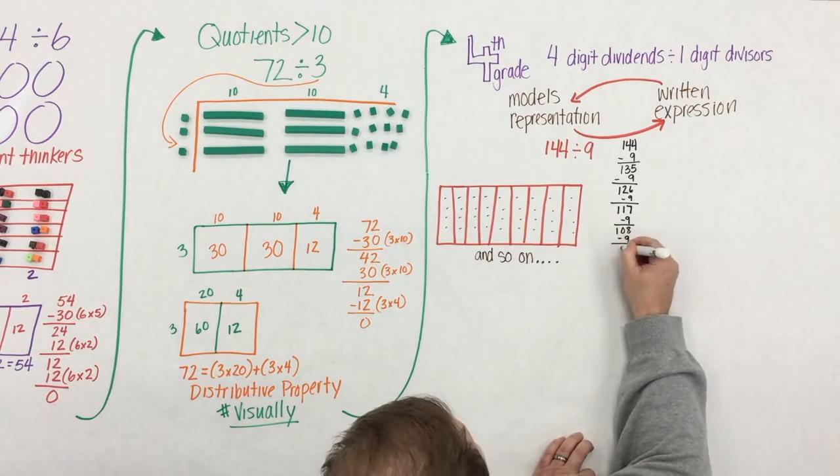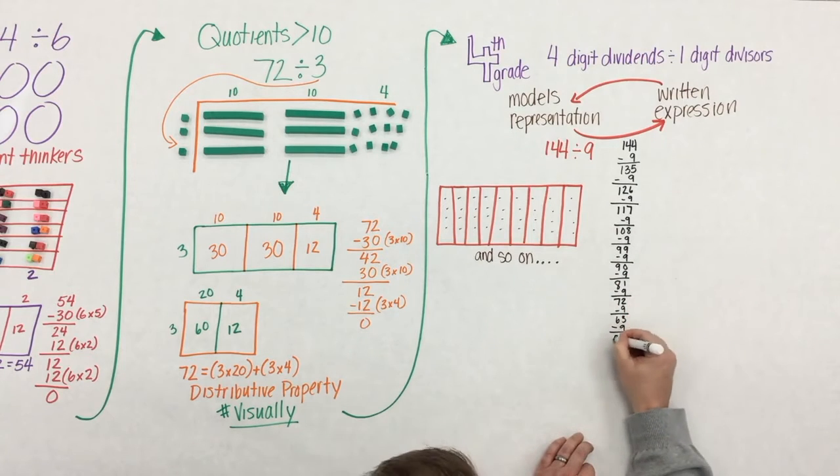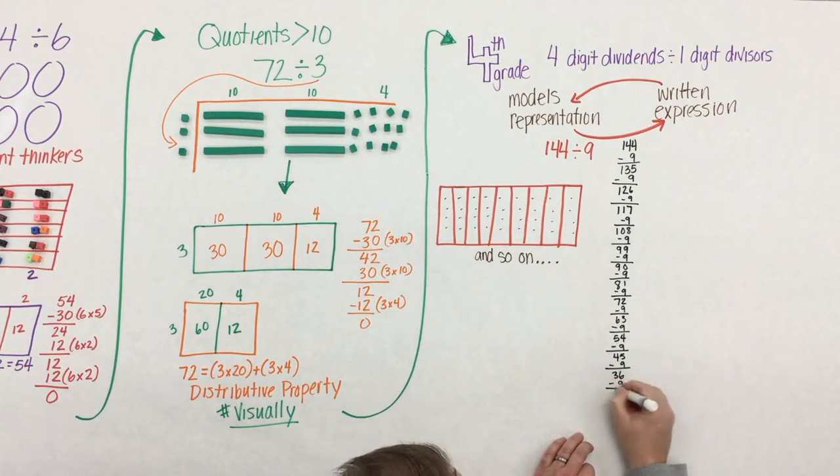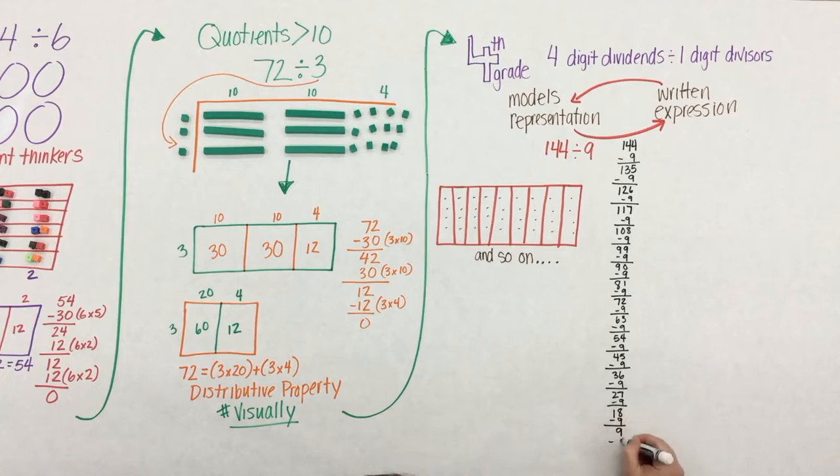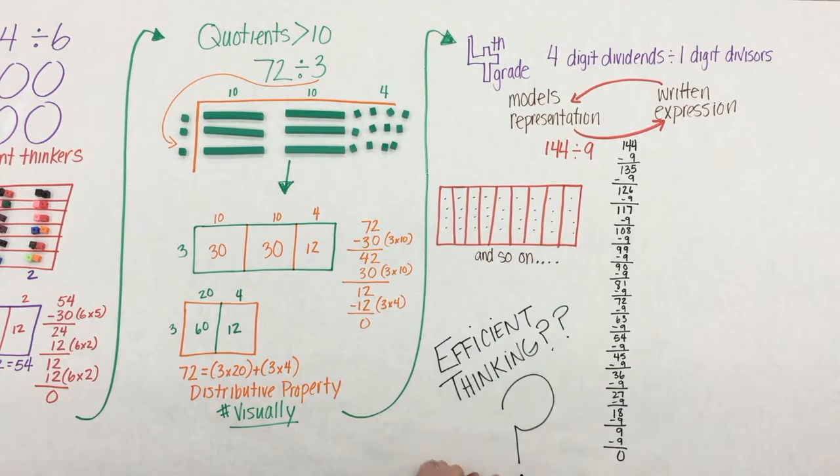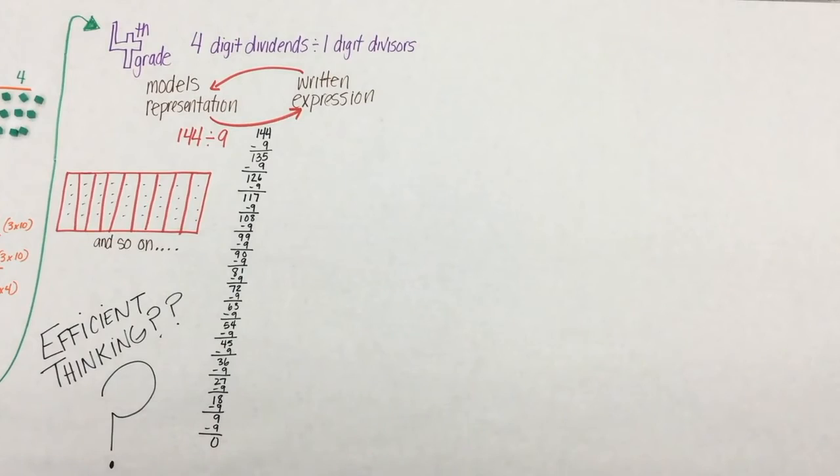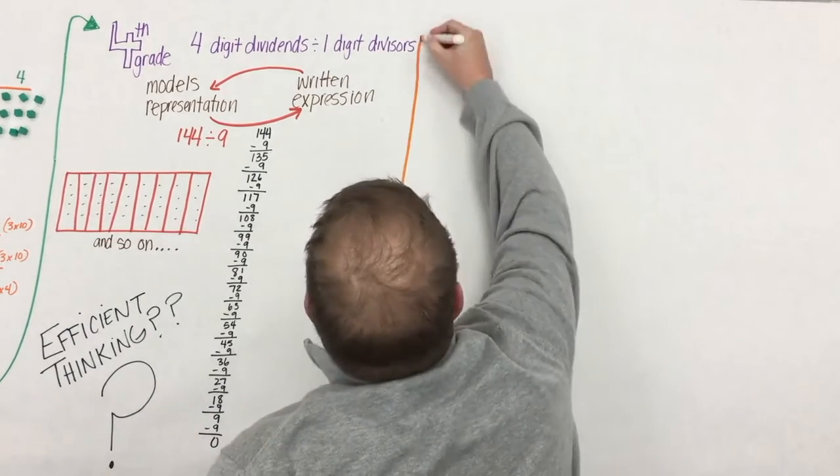But what does that model look like as a written expression? Well, here are the students repeatedly removing groups of 9 from the 144. Now, is this efficient? No, not at all. But it's really important that students work through this step, and they realize what efficient and non-efficient thinking looks like.